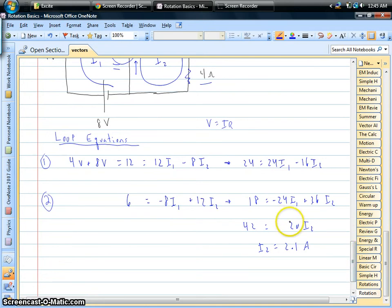We can plug that back into one of the other two equations. Let me take that second equation. Let's reduce it to this common factor of 2. We can plug in I₂. 6 times 2.1 would be 12.6.